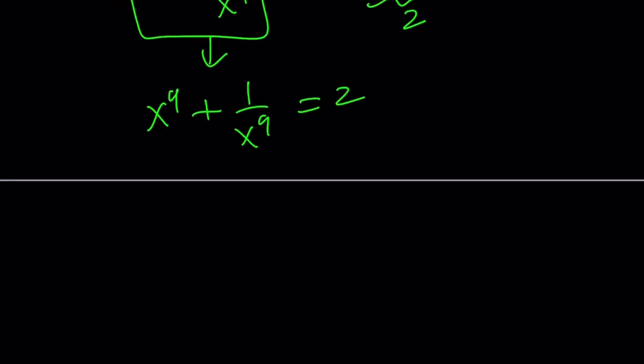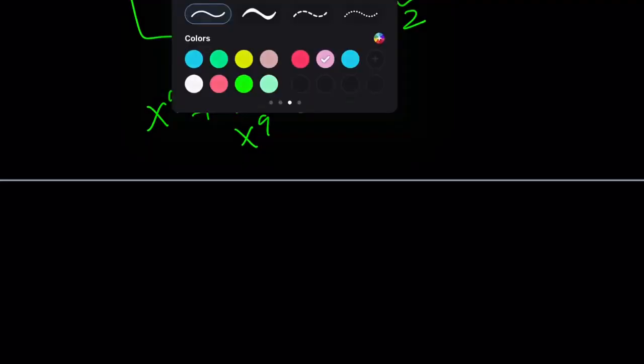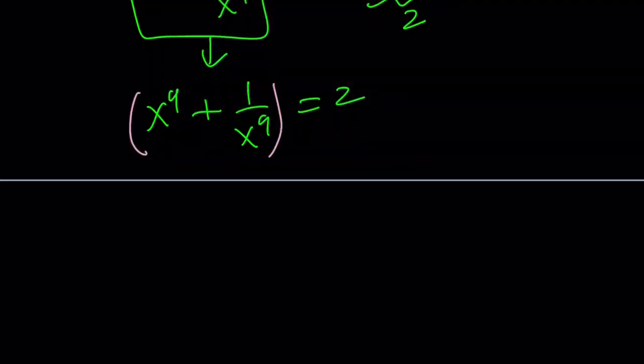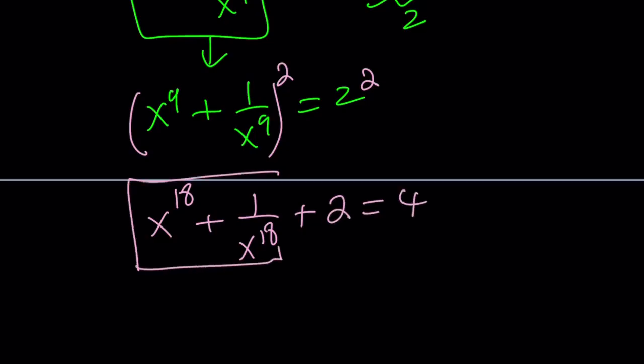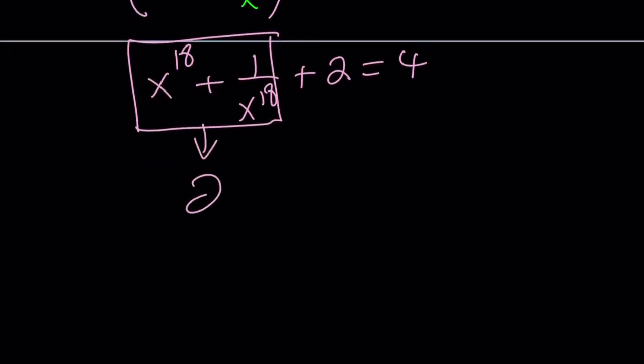Now we're going to get to the 18th power. So let's go ahead and square both sides because 9 times 2 is 18. Makes sense, right? Hopefully. x to the power of 18 plus 1 over x to the power of 18 plus 2ab. This is squaring, not cubing, so you're going to use a squared plus b squared plus 2ab. And that is going to be a 2. And that's equal to 4. And from here you get x to the power of 18 plus 1 over x to the power of 18 equals 2. And that will be the answer. 4 minus 2. Makes sense? We just go ahead and subtract 2 from both sides. And that gives us the answer.